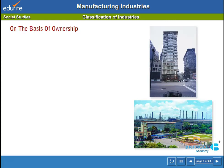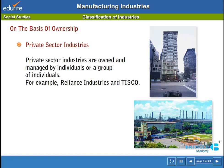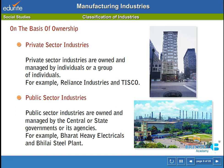On the basis of ownership: private sector industries are owned and managed by individuals or a group of individuals, for example Reliance Industries and Tisco. Public sector industries are owned and managed by the central or state governments or its agencies, for example Bharat Heavy Electricals and Bilai Steel Plant.